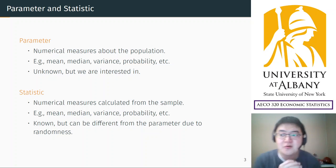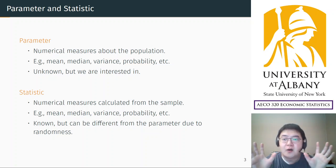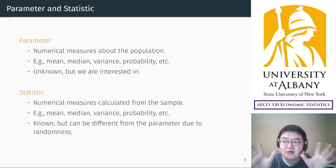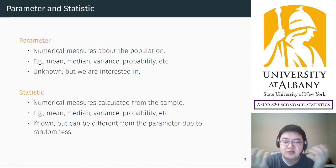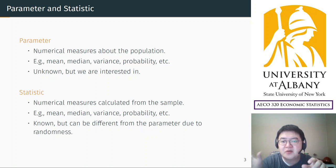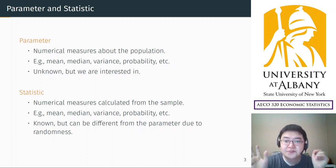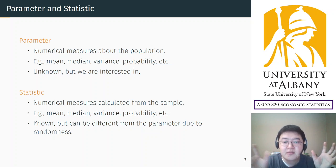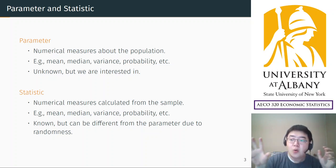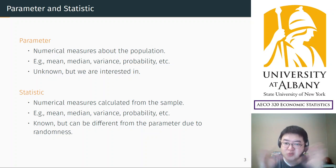What I wanted to tell you here: we contrasted the population and the sample — these two are counterparts in statistical inference. Similarly, parameter corresponds to statistic. A parameter is a numerical measure about the population, but a statistic is a numerical measure about the sample.